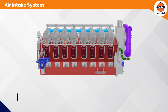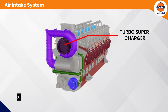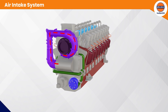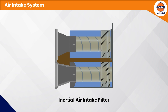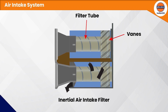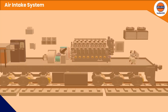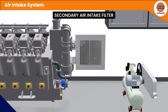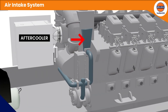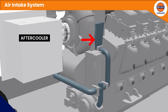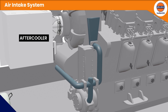The turbocharger's primary use is to increase air supply to the engine to produce more horsepower and provide better fuel efficiency by utilizing exhaust gases. The inertial air intake filters are cyclonic type, consisting of many filter tubes and stationary vanes mounted in a single assembly that filters clean air for combustion. A secondary engine air filter, oil-coated and made of fiberglass, filters remaining contaminants. The after cooler then cools the compressed air before it enters the air box.